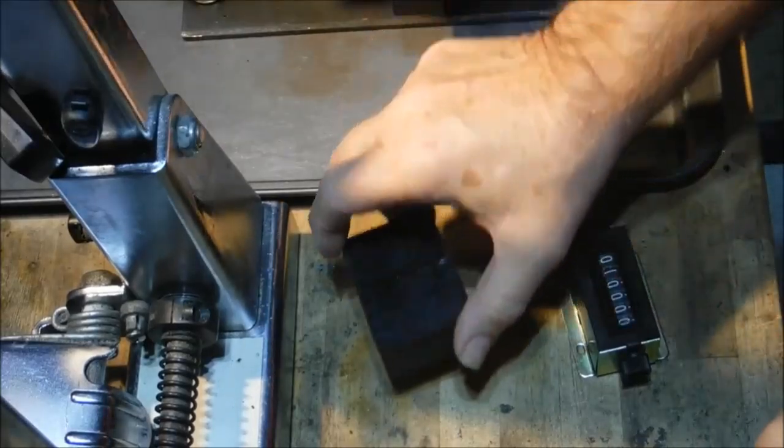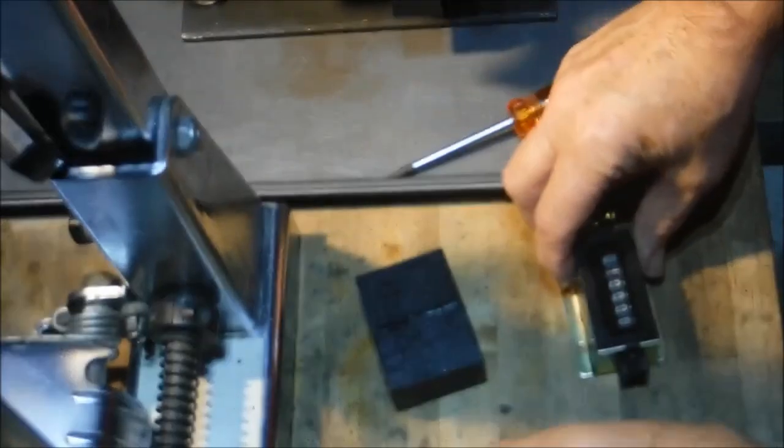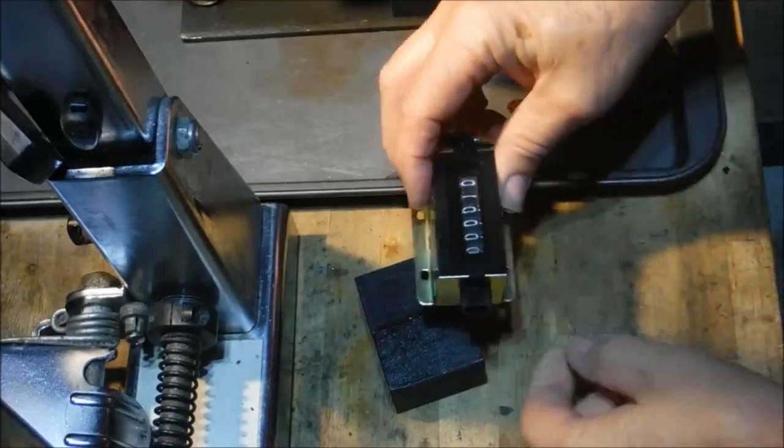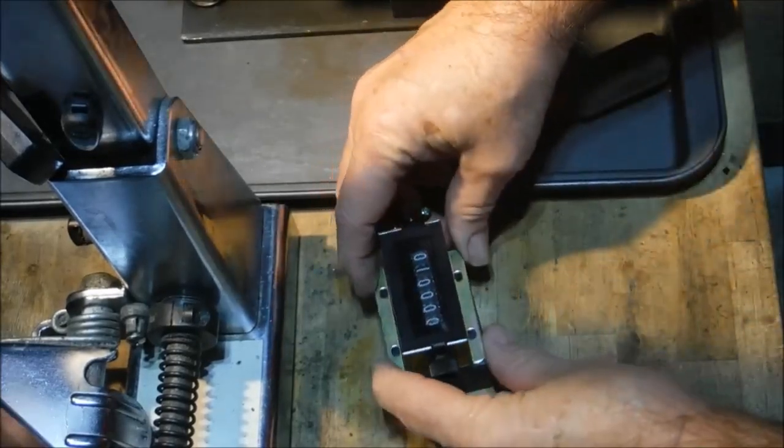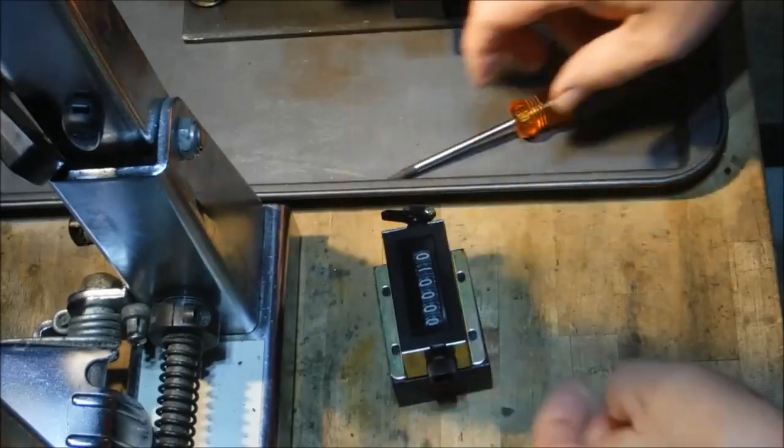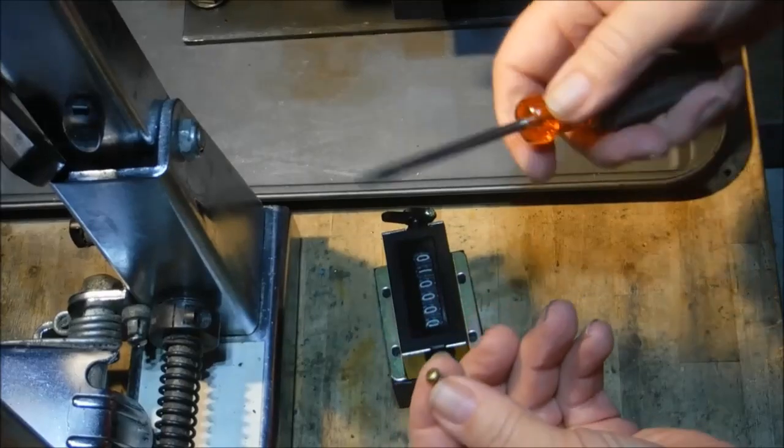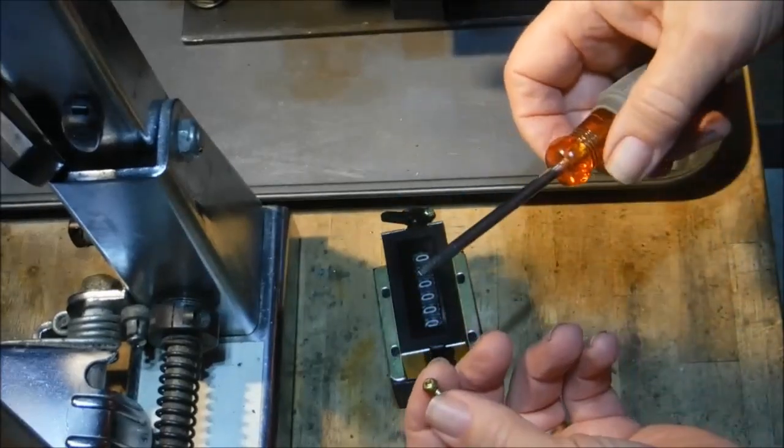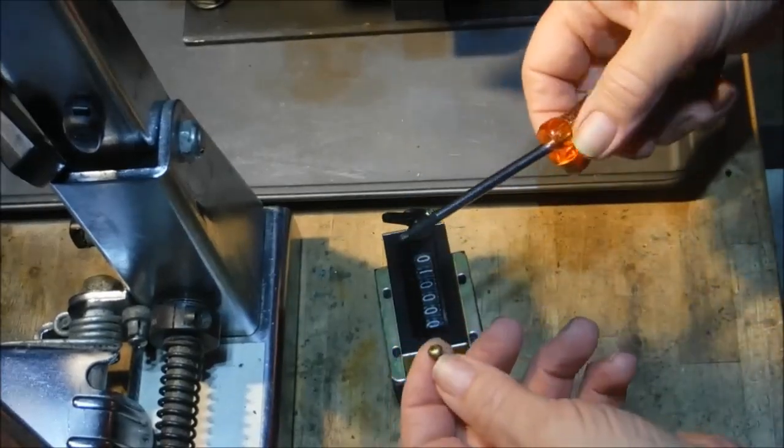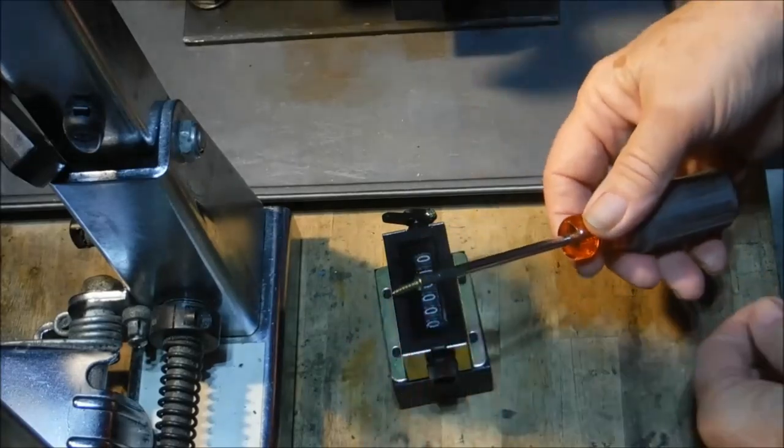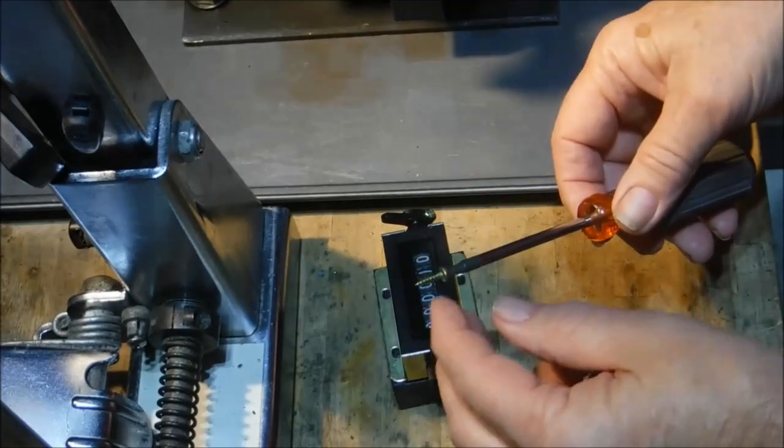Now the counter conveniently comes with mounting holes, so we'll line that up and I'll just screw that down with some number six half inch screws. When it comes to screw head interfaces, sorry to the rest of the world, but Canada's got you beat with the Robertson screw. Try that with a Phillips.